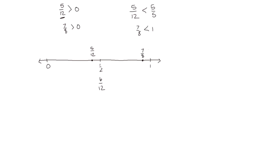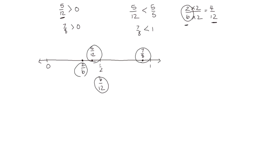Then let's look at one more fraction — two sixths. It's greater than zero and less than one. But I know that one half is six twelfths, and I could decompose two sixths into twelfths by multiplying the numerator and denominator by two. So I know two sixths is equivalent to four twelfths. That would make it less than half, less than five twelfths. So even though these aren't very accurate, I could still order these three fractions by their estimated position: two sixths is less than five twelfths is less than seven eighths.